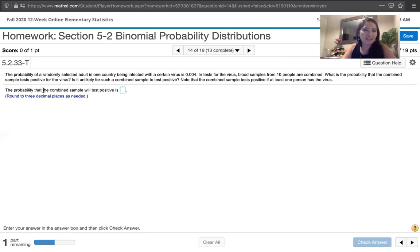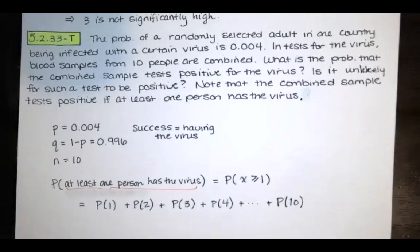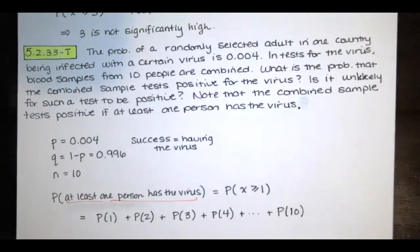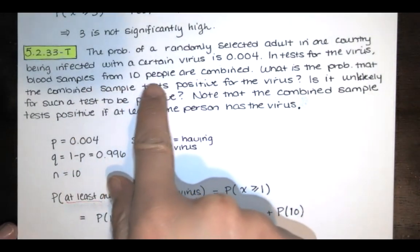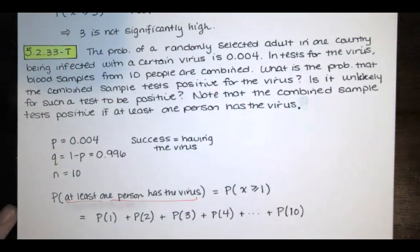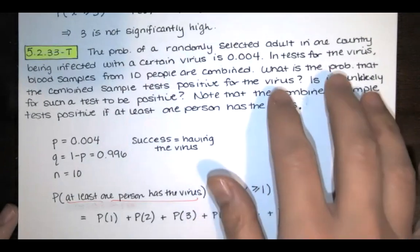The first question asks us to find the probability that the combined sample will test positive. We're dealing with a binomial distribution because when talking about a person and whether or not they have the virus, they either have the virus or they don't. Also, we're talking about blood samples from 10 people being combined, so that's 10 trials — N is equal to 10.